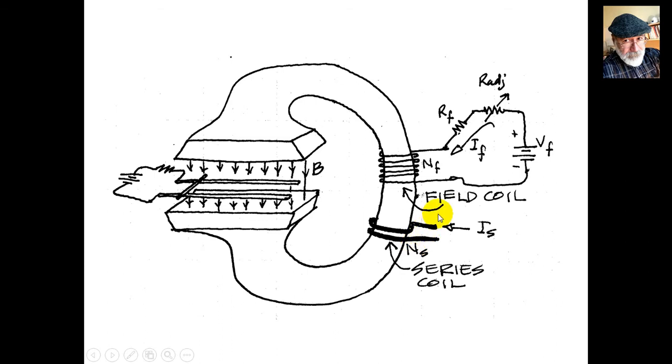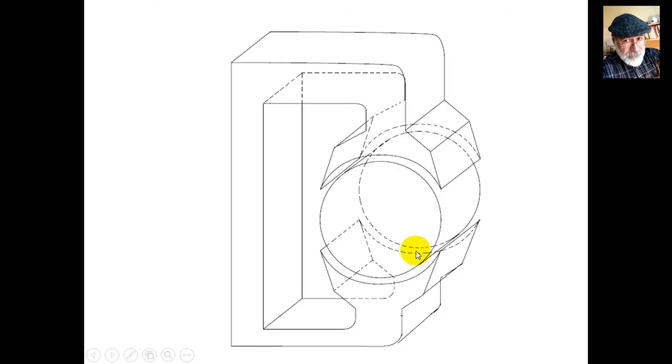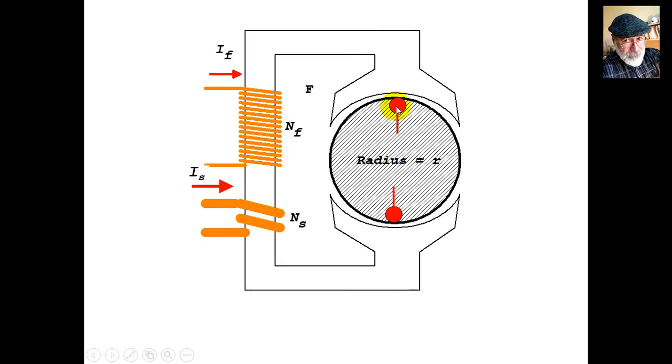In reality, we call these the field coil (with current IF and turns NF) and the series coil. In the real machine, the conductor with its current sits on a moving drum - one on top, one on the bottom - connected in ways we'll see in a different video.